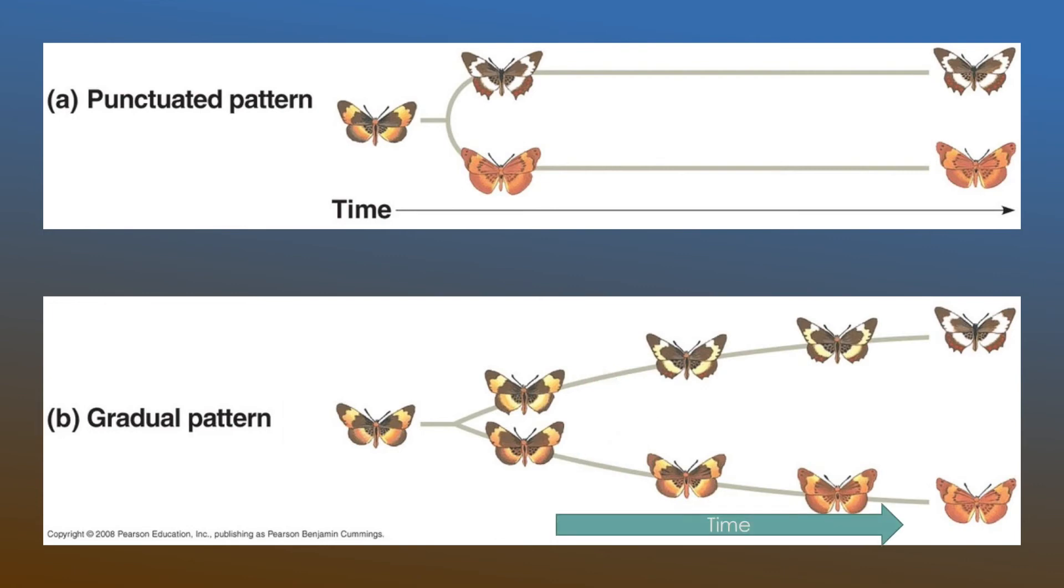However, as lots of time passes by, and this could be millions of years for a lot of different species, we see that the change finally occurs and those two new species with the two different colors are formed.